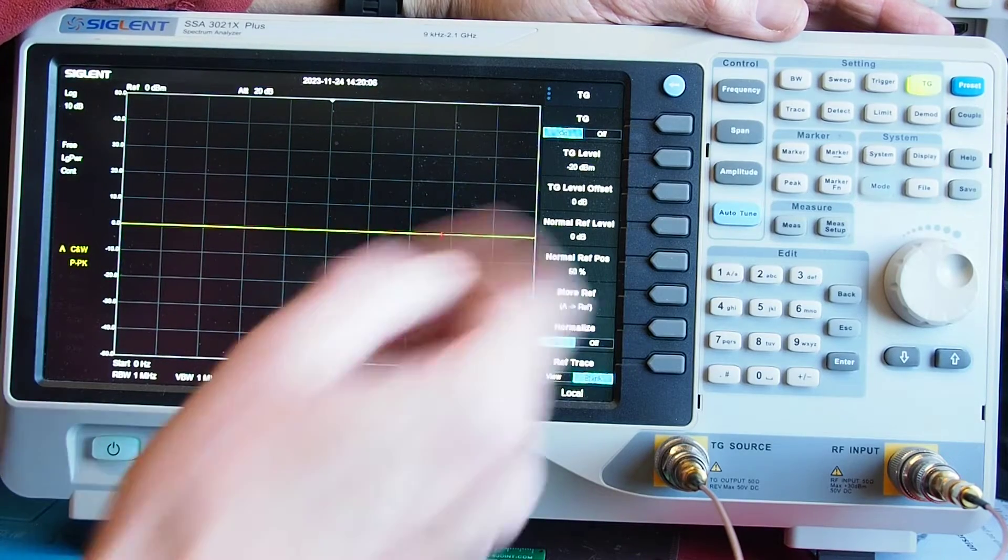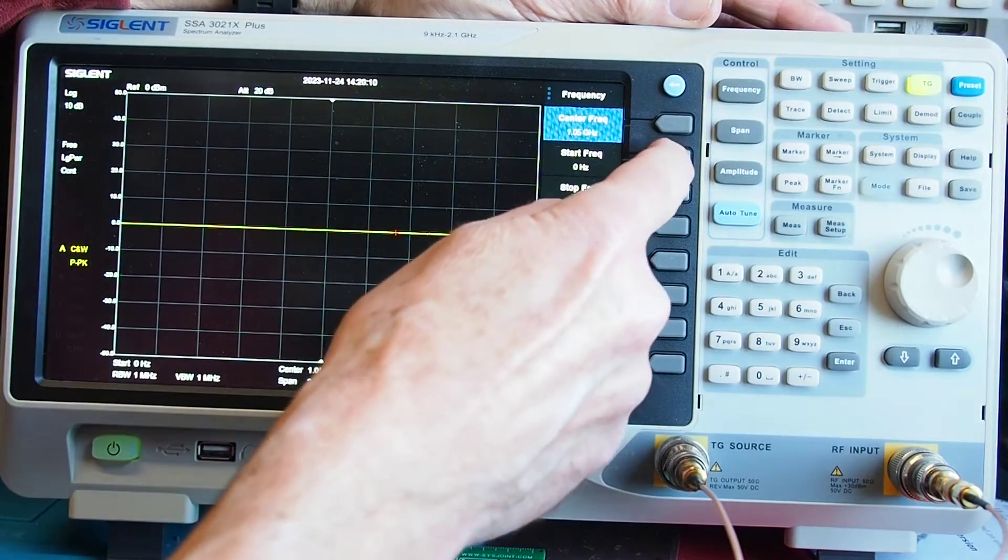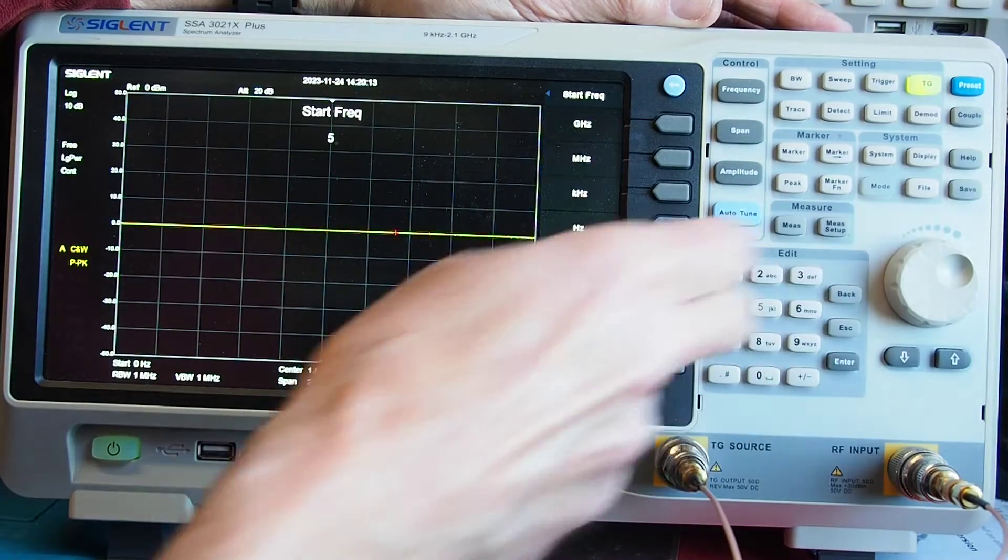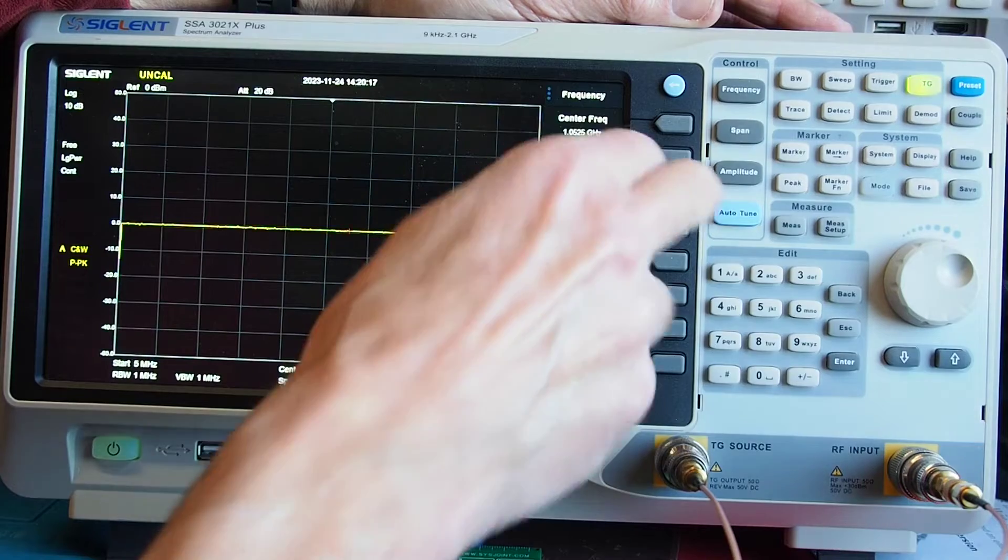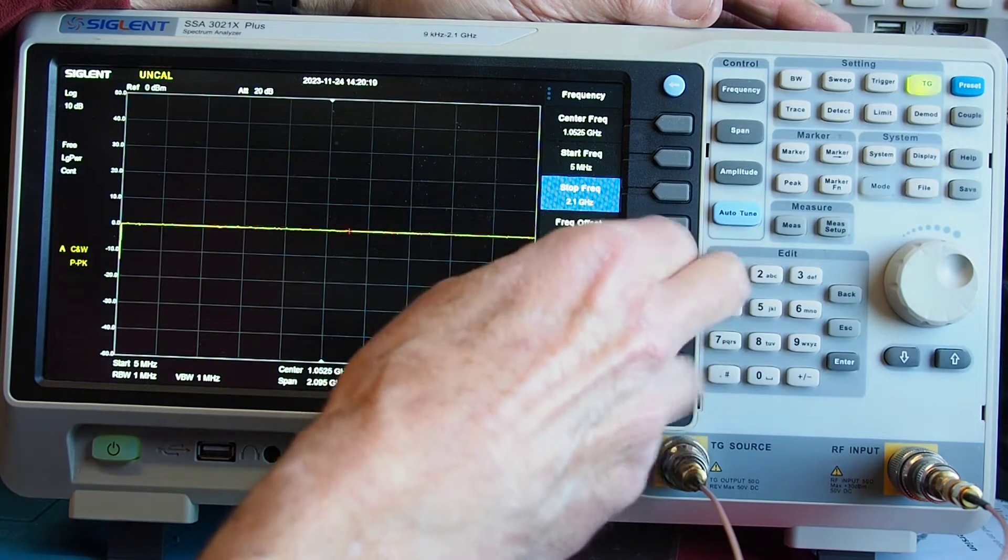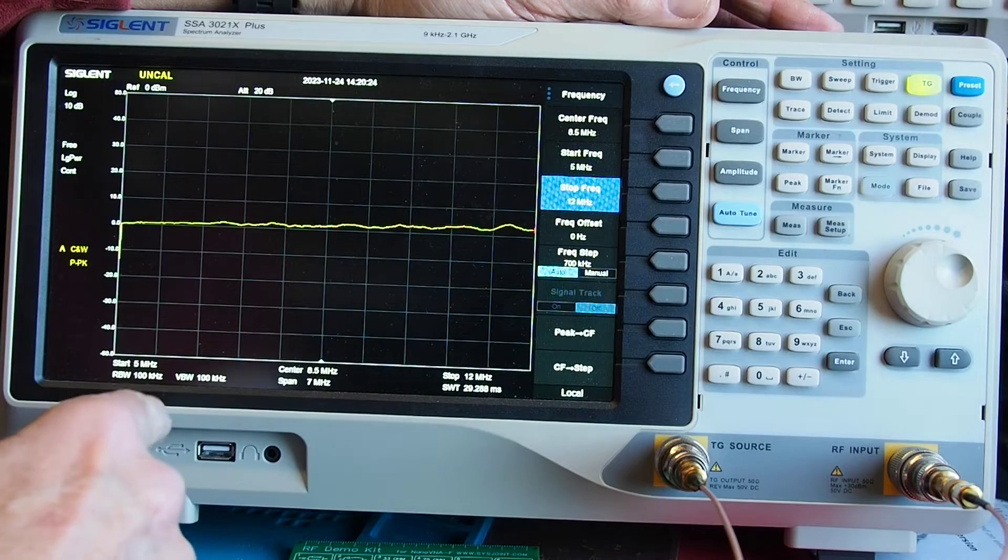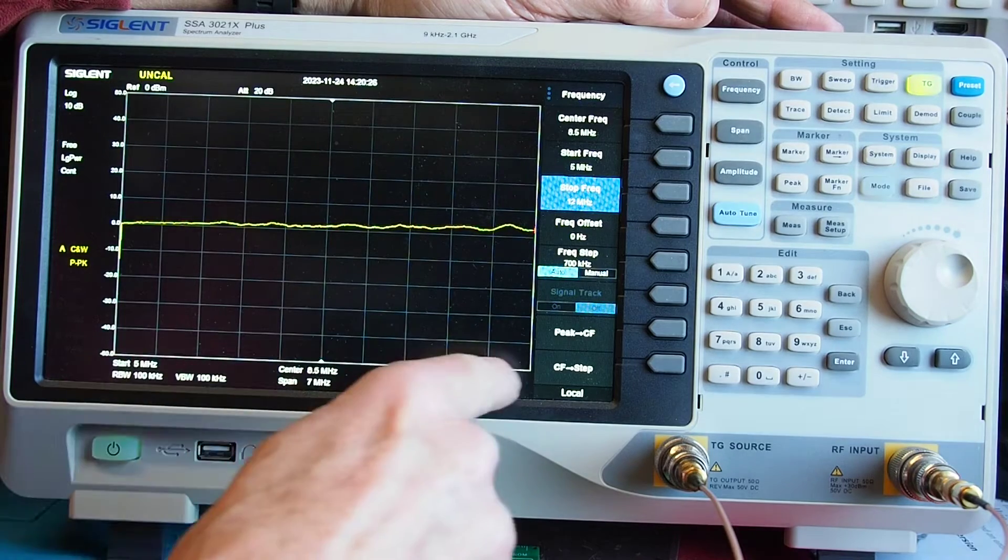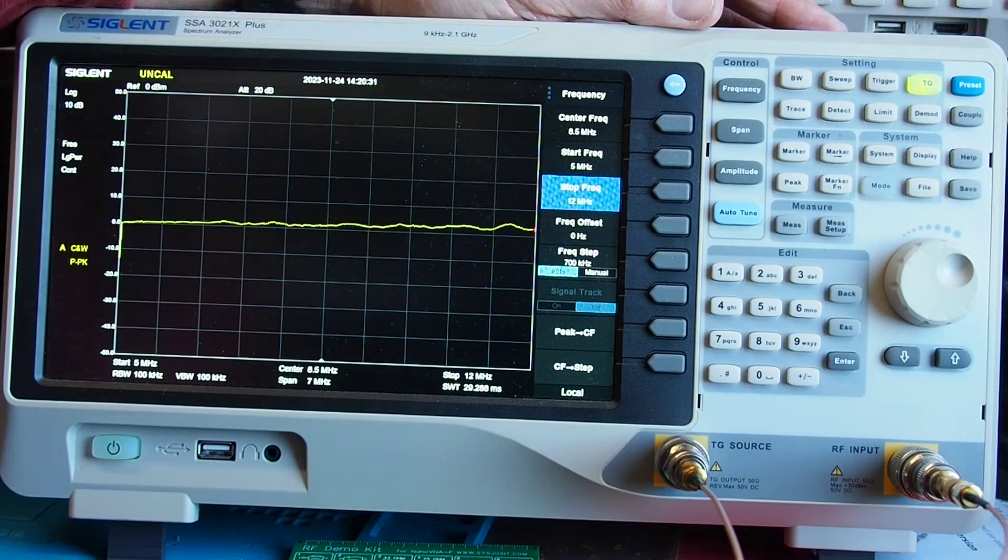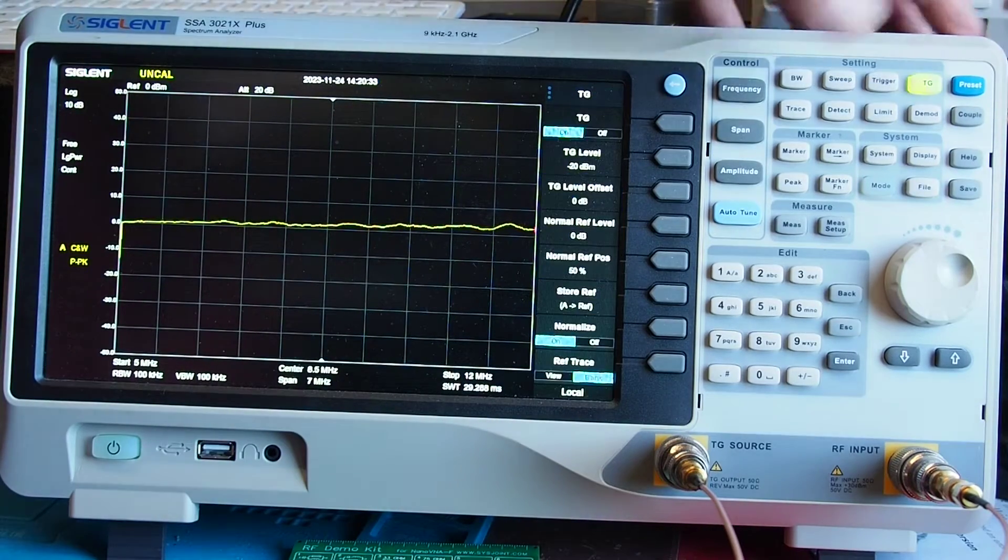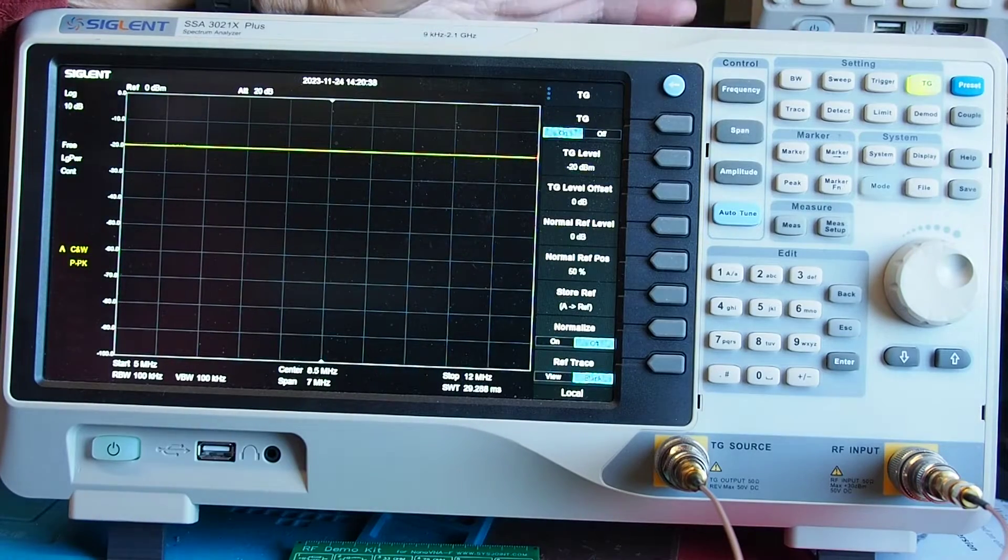Now at the moment we've got a massive sweep here which we don't actually need. I'm going to have a look at just a couple of filters on here so what I'm going to do is I'm going to go to frequency and I'm going to set up a start frequency of 5 megahertz and a stop frequency of 12 megahertz. So we've now got 5 to 12 and so we've zoomed in if you like. So the line isn't exactly straight so if we go back to the tracking generator again and click on the normalize we can actually straighten up the trace so now we're ready to go.